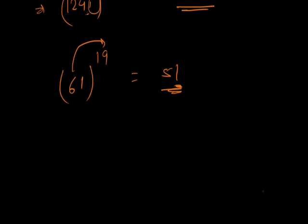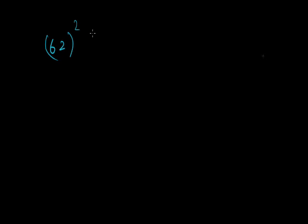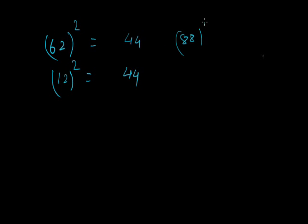The second concept relates to squares of numbers. Consider: 62 squared has last two digits 44, 12 squared is 144 so last two digits are 44, and 88 squared also ends in 44. If you remember squares up to 20 or 25, you can calculate the last two digits of squares of larger numbers.